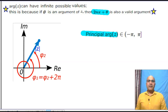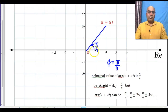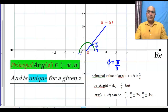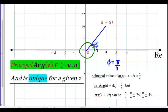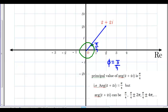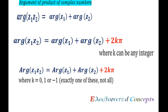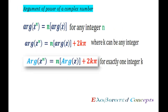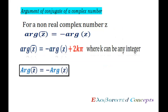Argument of a complex number has many values. We find a value of argument z and then generalize it, but there is exactly one value that belongs to the interval minus pi to pi, which is called the principal argument z. Hi, I am Arun Krasesh. In this video we are going to describe properties of argument, considering all the aspects of the argument.